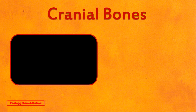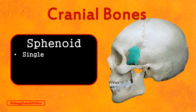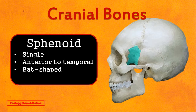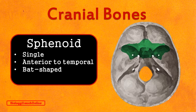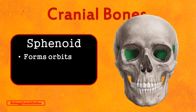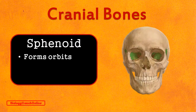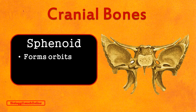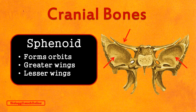Now we have the sphenoid bone — a single, unpaired bone located anterior to the temporal bones. The sphenoid bone takes the shape of a bat with outstretched wings. It is centrally located but stretches from one side of the cranium to the other, forming part of the floor of the cranium and helping strengthen the sides of the cranium as well. Looking at the frontal view, we can see the sphenoid bone in the back of the orbits of the eyes — it helps form the orbits. Extracting the sphenoid bone whole, we can clearly see that bat shape, with greater wings and lesser wings.